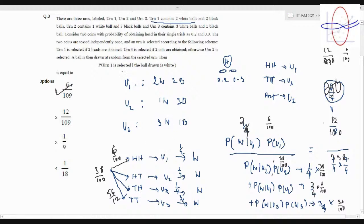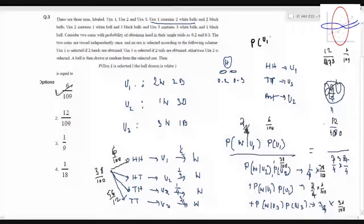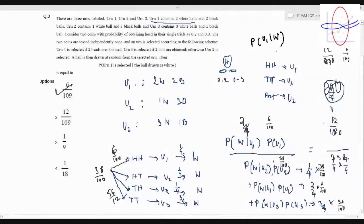So what is the probability that Urn 1 is selected given the ball drawn is white? If the ball drawn is white, essentially it's asking for probability U1 given W, and therefore we need to use Bayes theorem.